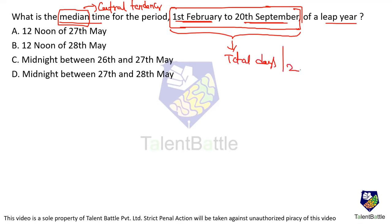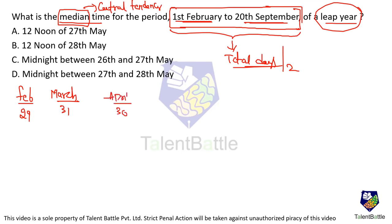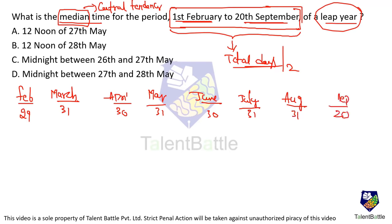It's a leap year, so February has 29 days. Then: March 31, April 30, May 31, June 30, July 31, August 31, September 20 (only up to 20th). Total days = 29+31+30+31+30+31+31+20 = 233 days.